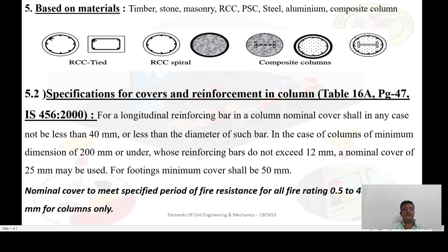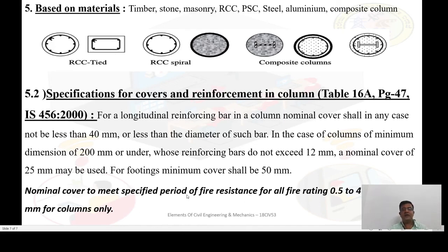We will now discuss the specifications for cover and reinforcement in columns. As per IS-456-2000 table 16, for longitudinal reinforcing bars in a column, the nominal cover shall in any case not be less than 40 mm or not less than the diameter of such bar. In the case of columns of minimum dimension 200 mm or under whose reinforcing bars do not exceed 12 mm, a nominal cover of 25 mm may be used. For footing, a minimum cover shall be 50 mm. As per IS-456-2000, a nominal cover to meet the specified period of fire resistance for all fire ratings of 0.5 to 4 hours is 40 mm for columns only. As per IS-456-2000, a nominal cover shall be 25 mm. Thank you.